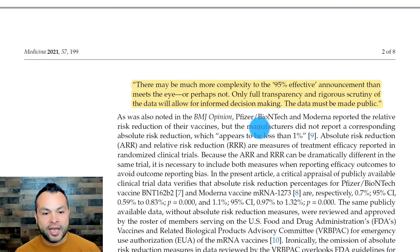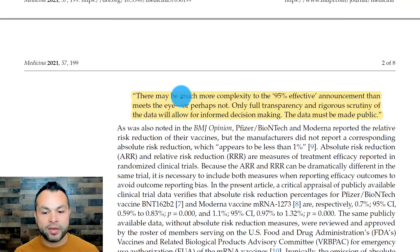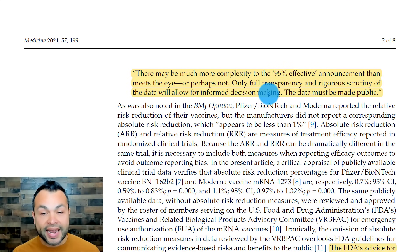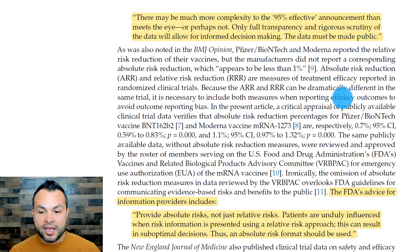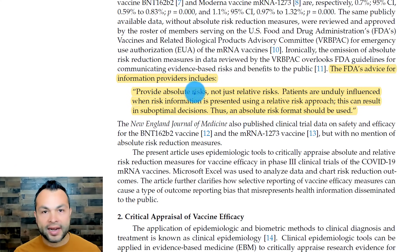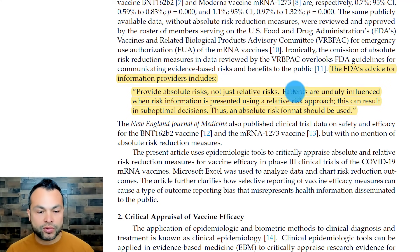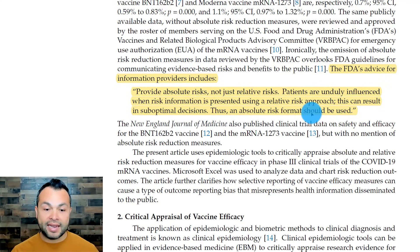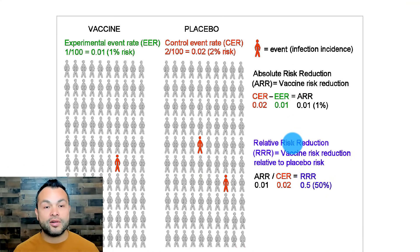From this paper: there may be much more complexity to the 95% effective announcement than meets the eye. Only full transparency and rigorous scrutiny of the data will allow for informed decision-making. The data must be made public, and it certainly isn't. The FDA's advice for information providers includes providing absolute risks — not just relative risks — which is what you're hearing about. Patients are unduly influenced when risk information is presented using a relative risk approach, which can result in suboptimal decisions. An absolute risk format should be used.